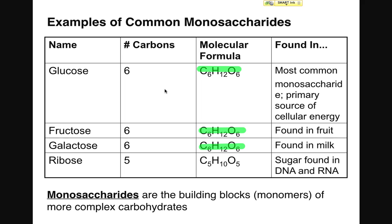Glucose, fructose, and galactose are all the same atoms, but those atoms are going to be arranged in different configurations so as to make one molecule different from another. Because in biology, the structure of a molecule tells us something about the function of the molecule. All three of these molecules are going to have different functions based on their structures.